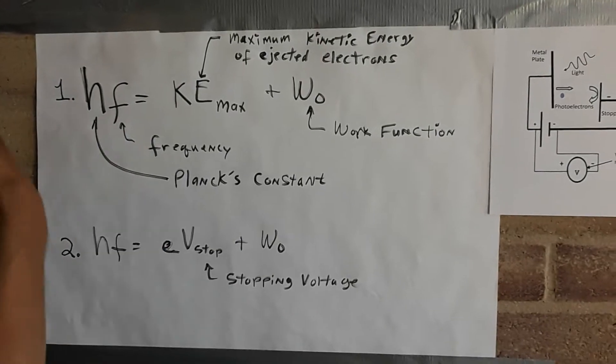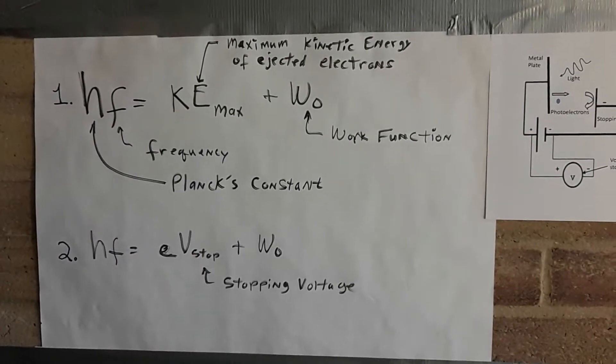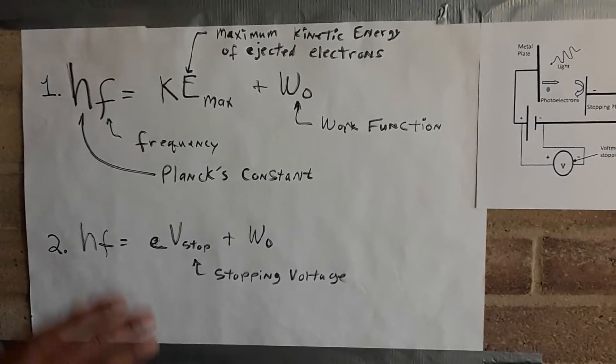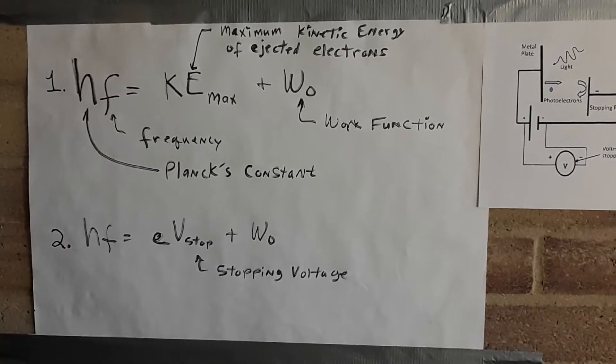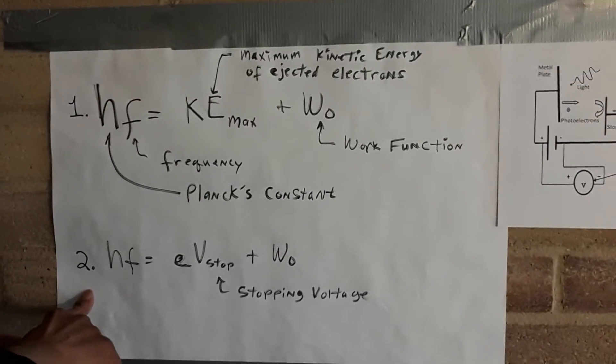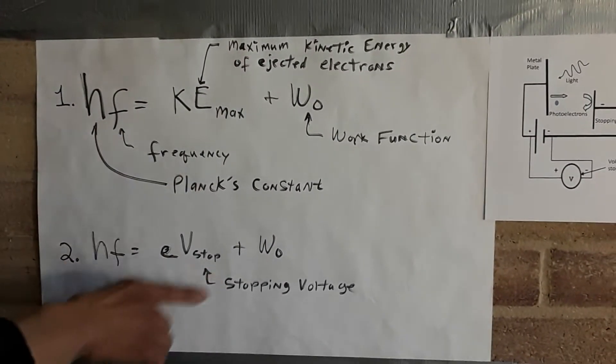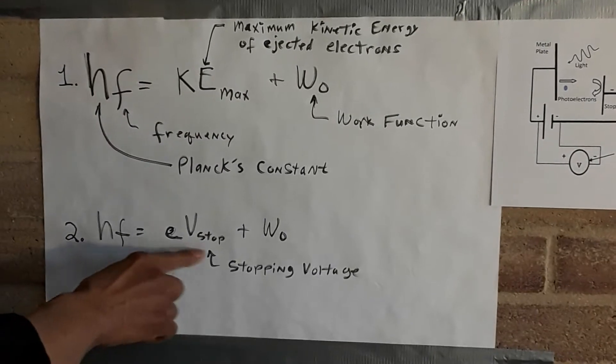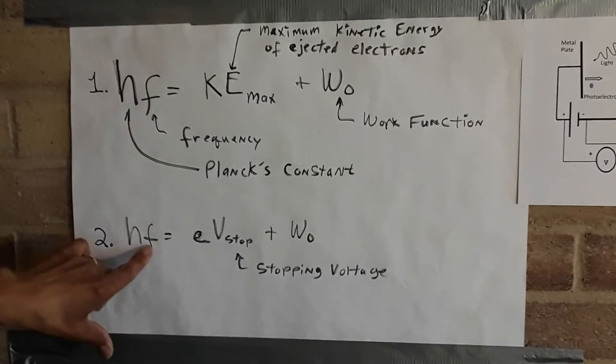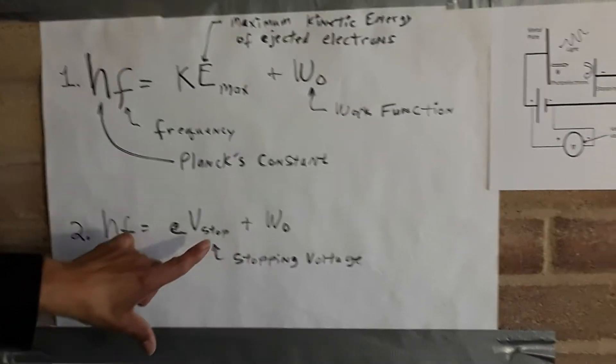In other words, we're going to stop those electrons that are going away with the maximum KE value. And once we stop them, then all the current will stop flowing. And now the equation from here becomes equation number two. Same equation, but now we replace KEmax with eVstop. So now this says that this is the frequency of the photon and this is our stopping voltage.